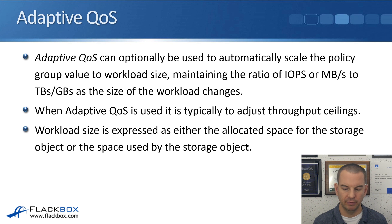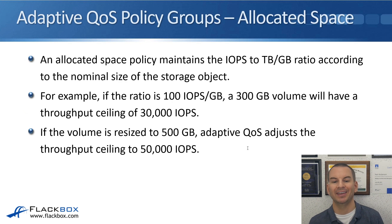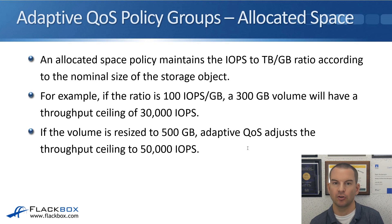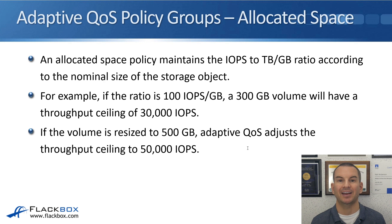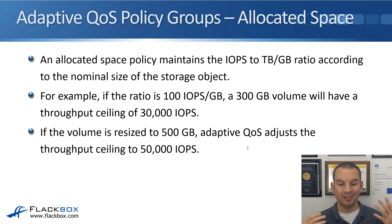The workload size can be expressed as either the allocated space or the space actually used by the storage object. An allocated space policy maintains the IOPS to terabyte/gigabyte ratio according to the nominal size of the storage object. For example, if the ratio is 100 IOPS per gigabyte, a 300 GB volume will have a throughput ceiling of 30,000 IOPS. If the volume is resized to 500 GB, adaptive QoS adjusts the throughput ceiling to 50,000 IOPS — it doesn't care how much data is actually in the volume, only the size of the volume itself.